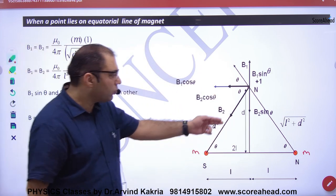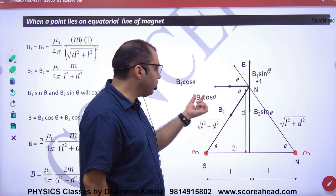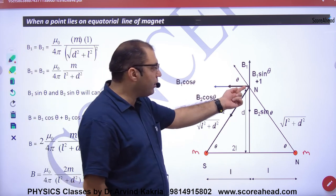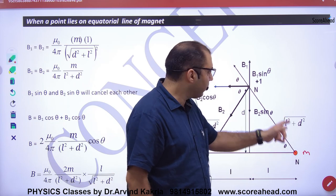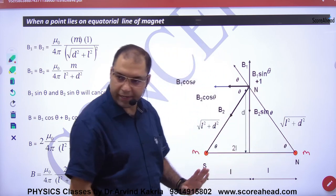What is the point clear? This component will cancel. Net B value will come. What do we want to do? Add. We will add both. What will be the value of B1? Mu naught by 4 pi, M into 1 upon under root of L square plus d square whole square.